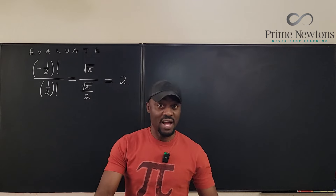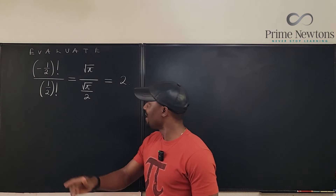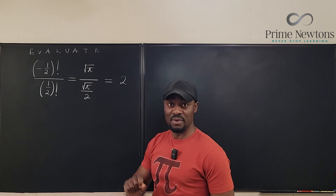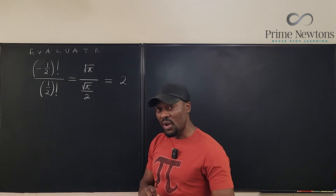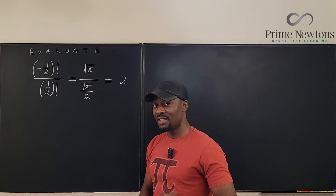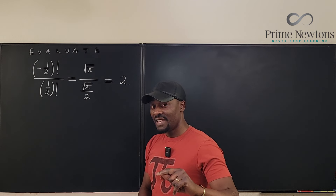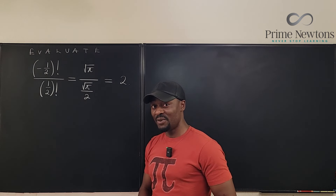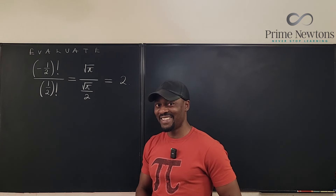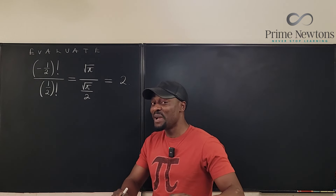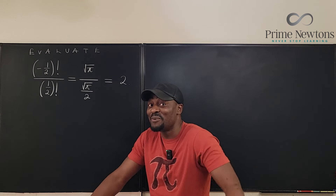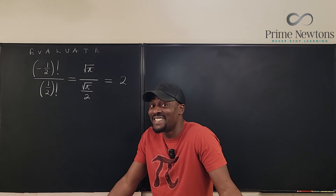So the only question is: how do we know that (-1/2)! equals the square root of pi? I'll show you the illegal way first and then the legal way. The illegal way works — I don't know why it works, but it just works.